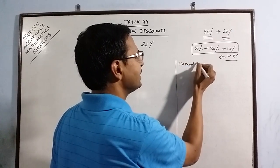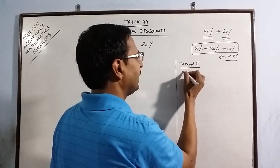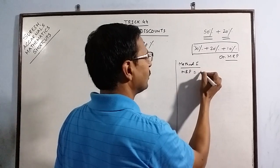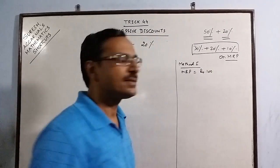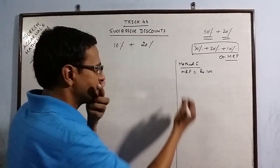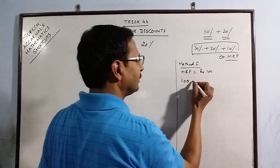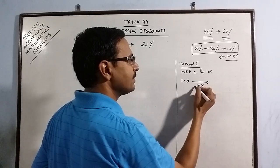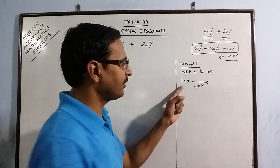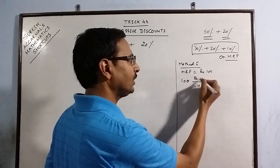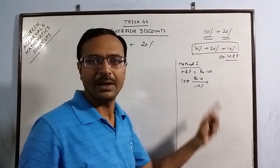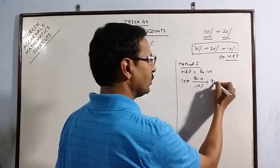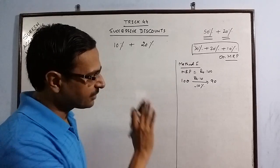The first method is to have the MRP as Rs.100. If I consider MRP as Rs.100, the first discount is 10%, so minus 10%. 10% of Rs.100 is Rs.10. So Rs.10 is subtracted, now MRP is Rs.90. This is after 10% discount.